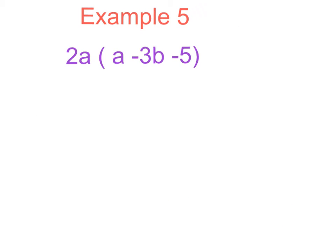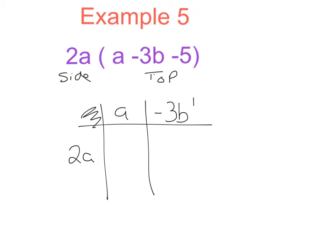Example 5 here I have 2a all multiplied by a minus 3b minus 5. Side and top. Along the side I'm writing 2a. Along the top I now have 3 terms, so it will just mean I'll have 3 lines. So it'll be a, my second term is minus 3b - remember always take the sign in front - and my last term is minus 5. We've got to watch our signs here and just be very careful.